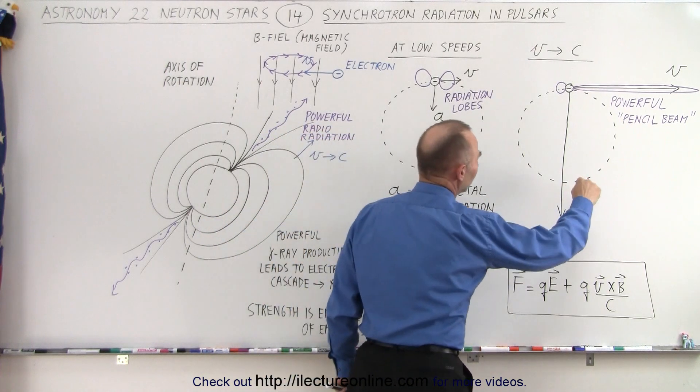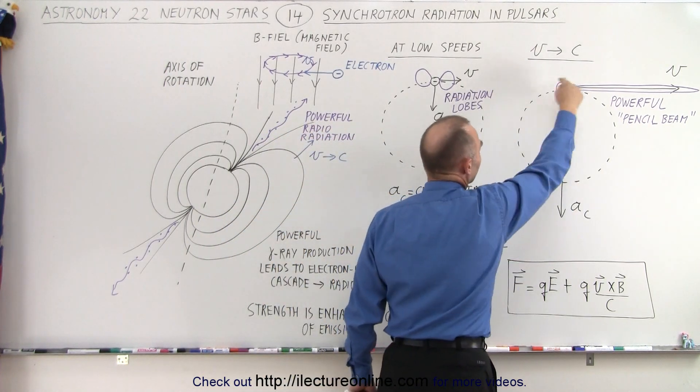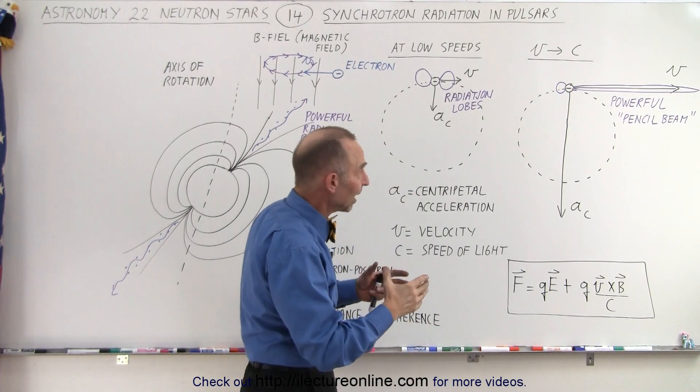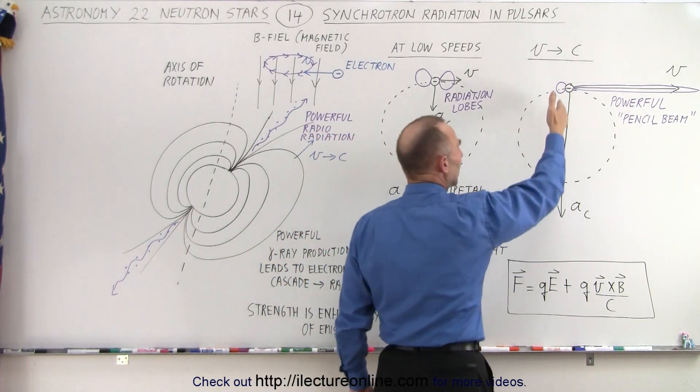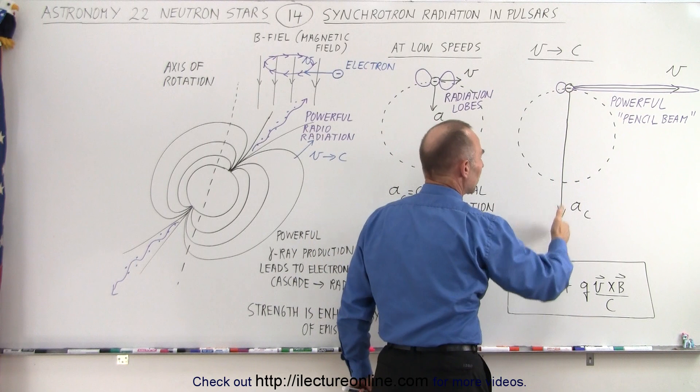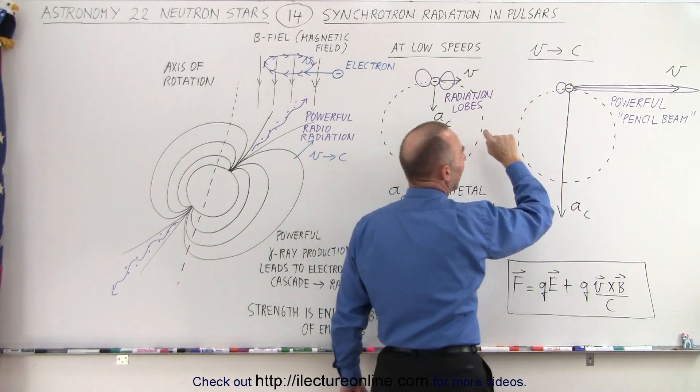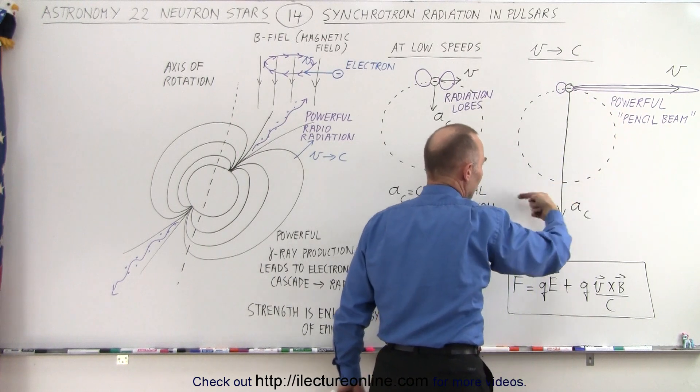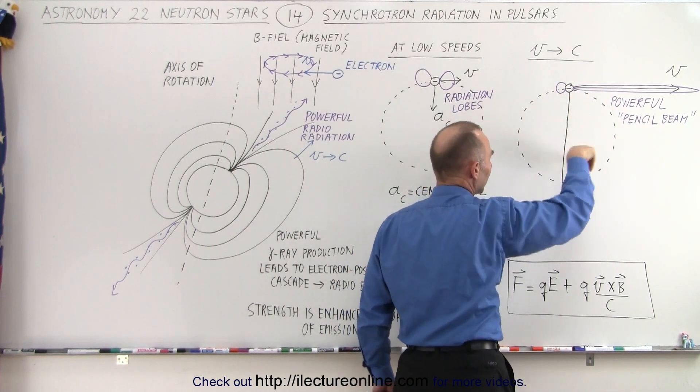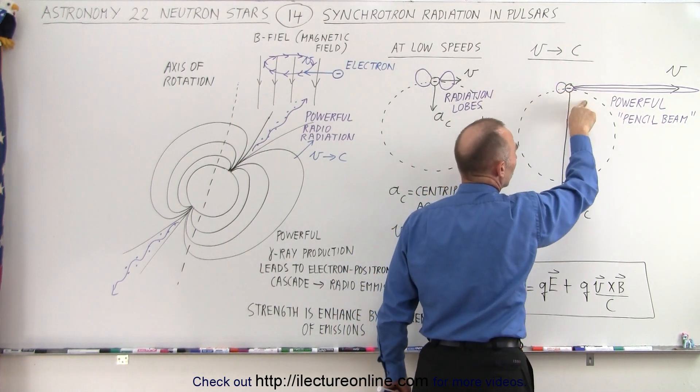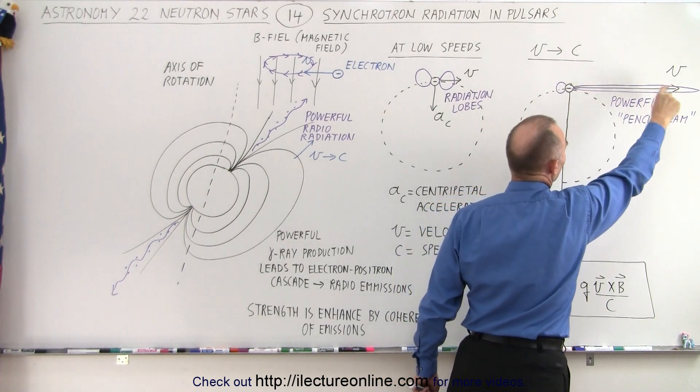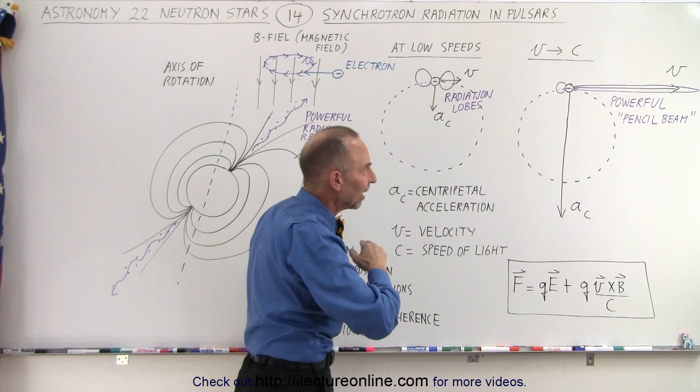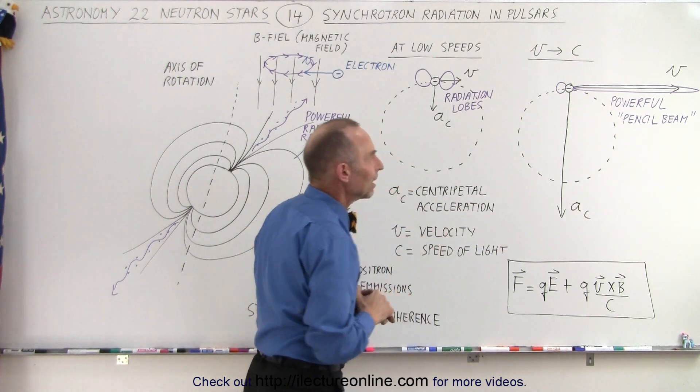But as the object begins to move faster, and the speeds of the object, like electrons, start approaching the speed of light, then we have a much greater centripetal acceleration. In the direction of travel, you can see that the pencil beam is going to go around like that. But in the direction of motion of the charge, we have a much more powerful, much more directed, and much more narrow beam of radiation that is emitted from the charge.